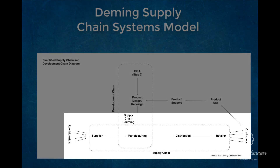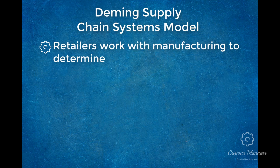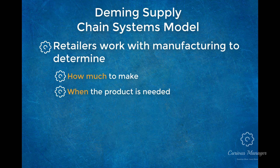Once the sourcing is completed, the manufacturing function places orders with the supplier, who then procures the required materials for the manufacturer. The product is produced and then provided to a distributor who performs a logistical function, defined as the role of transporting products to where they are required. The distributor provides the product to the retailer, who then makes it available for purchase by the customer. Supply chains work in conjunction with manufacturing to determine how much of a product to make, when it needs to be available, and where it is needed, typically done through various types of contracts.